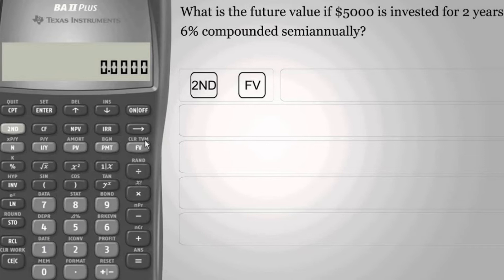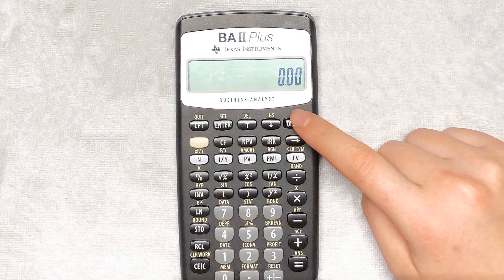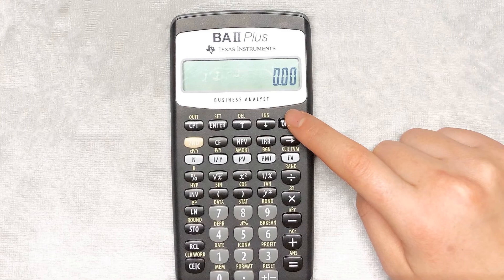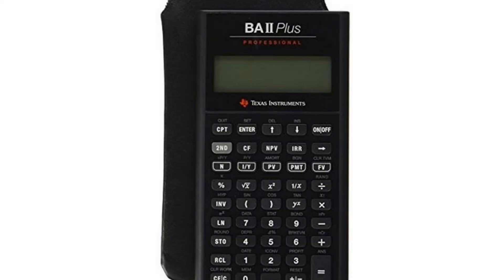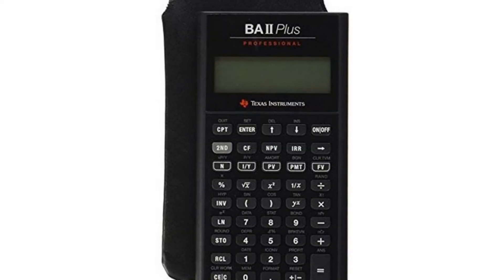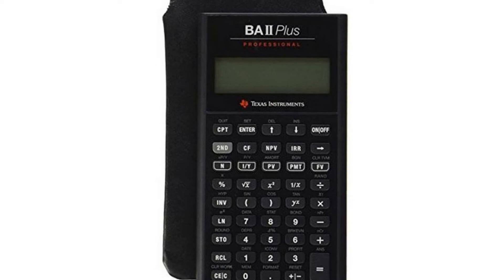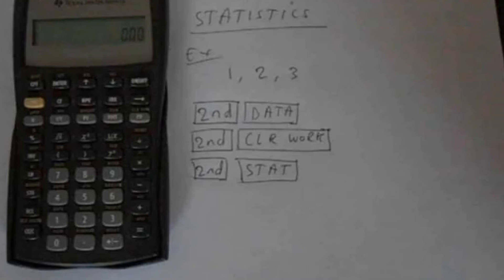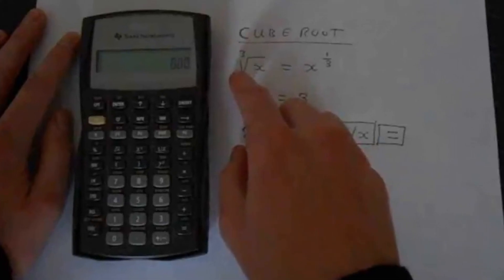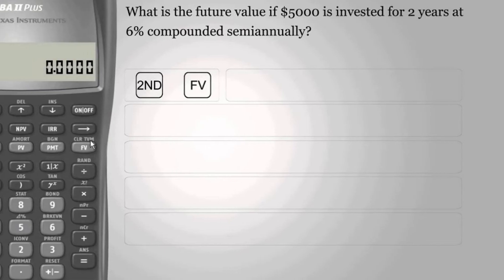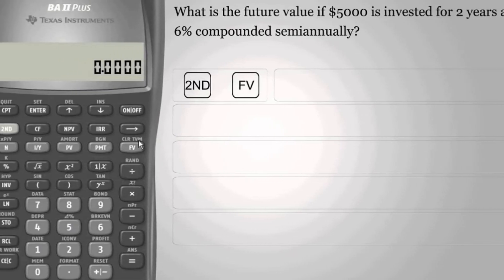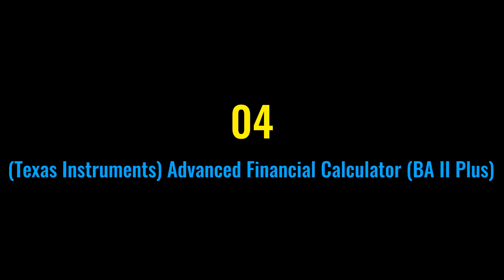Features: profitability calculations, cash flow function calculates NPV and IRR for uneven cash flows, time value of money and amortization keys solve problems including pension calculations, loans, mortgages, etc. Ideal calculator for students, managers, and statisticians. Built-in functionality: list-based one and two variable statistics with four regression options: linear, logarithmic, exponential, and power.